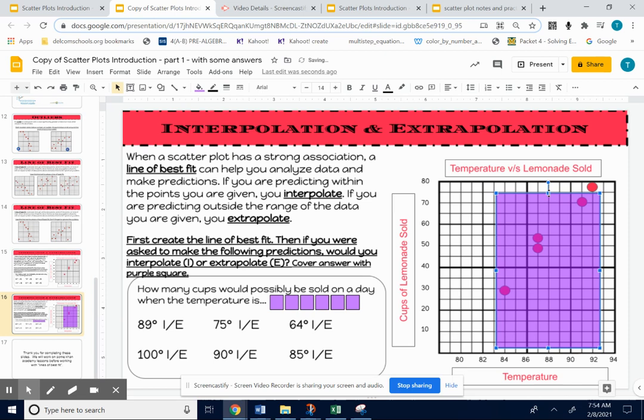Kind of look at my x values. I guess it doesn't matter if the x or the y. But see how this section of my scatterplot is the section that I have points on? If I make a prediction anywhere within this section of my graph, that's called interpolate.